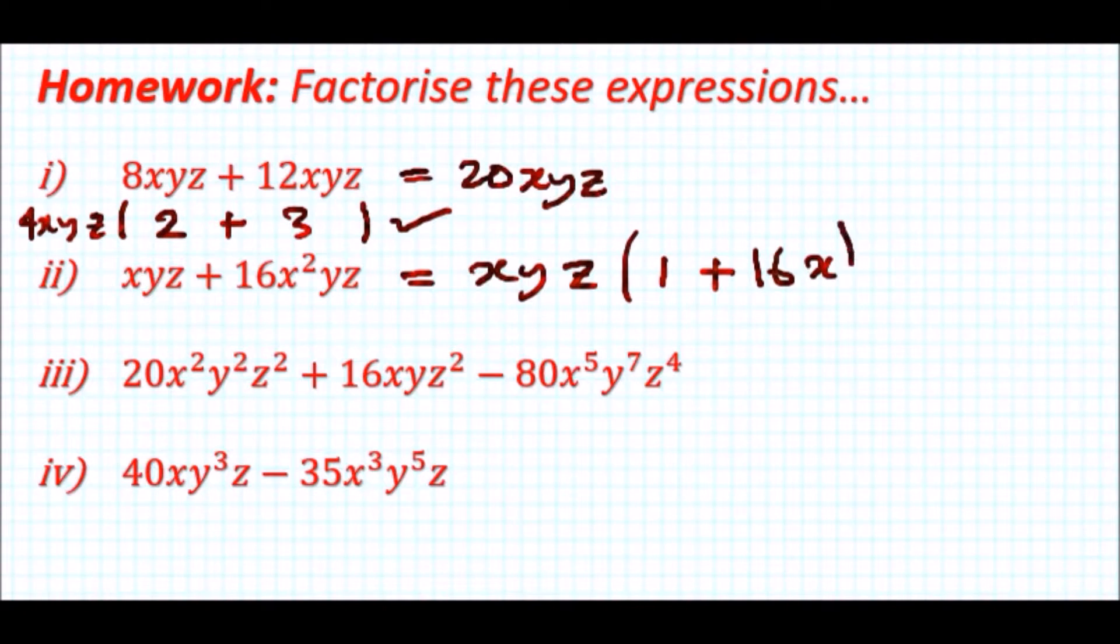Now for the third part, we know that 20, 16, 80 are all in the four times table. They all have at least a single x, they all have at least a single y. Always look at the lowest power here to tell you. They all have z², z², z⁴ - they all have at least z squared.